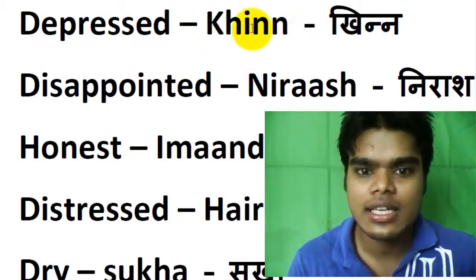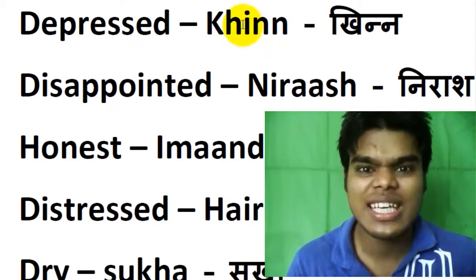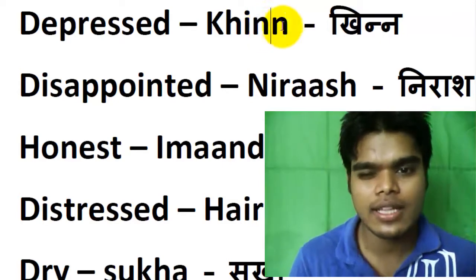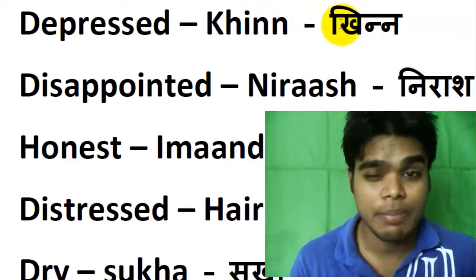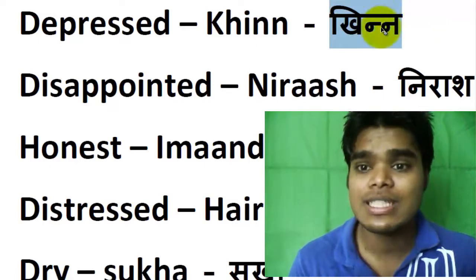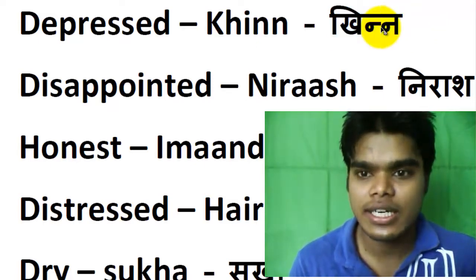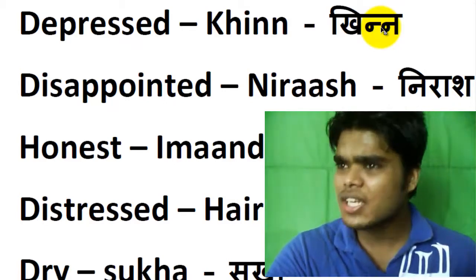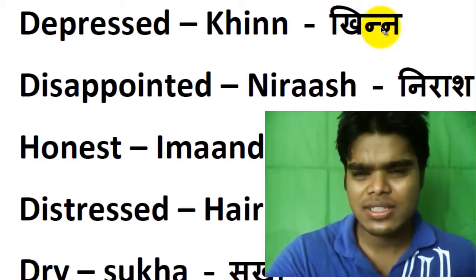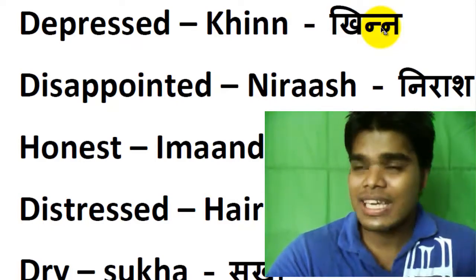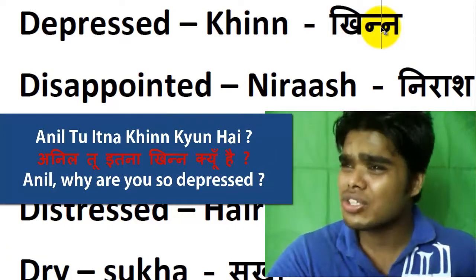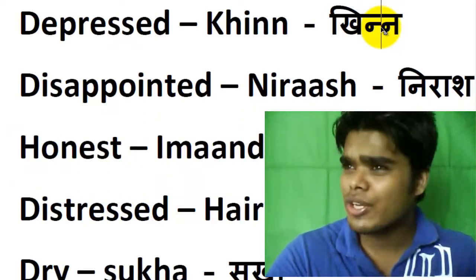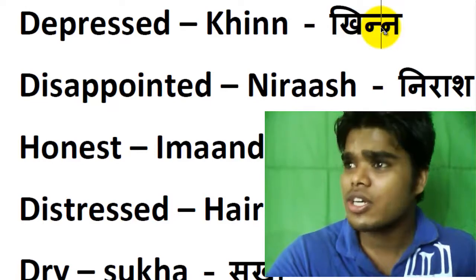Khin — this is an aspirated 'ka' sound. This is the half form and this is the full form. I suggest you always refer to the Devanagari script. Khin means a little sad, depressed. You can say, for example, 'Why are you looking so depressed?'